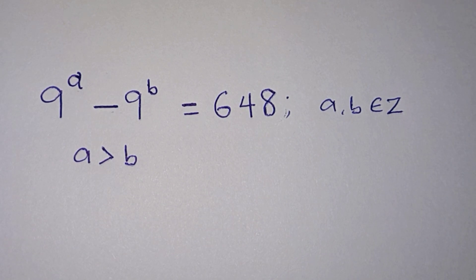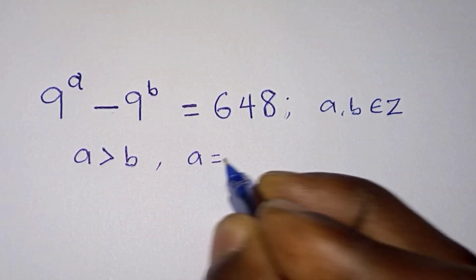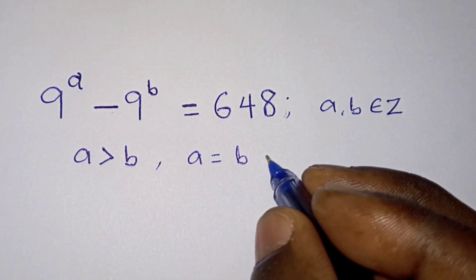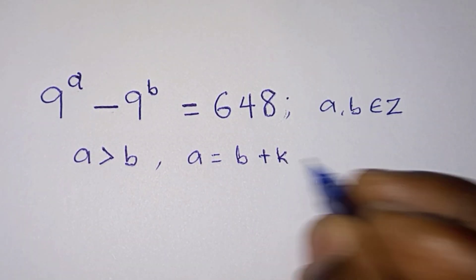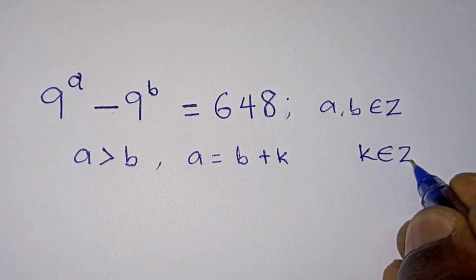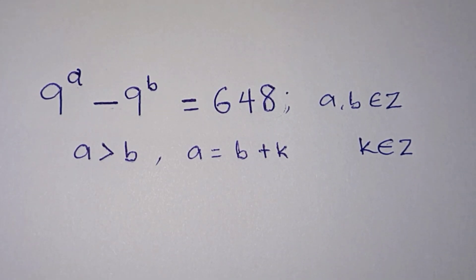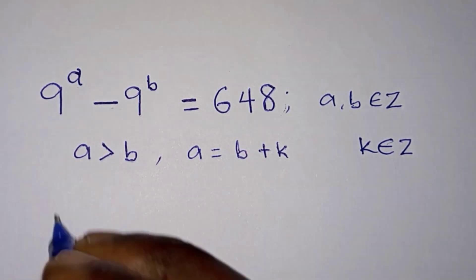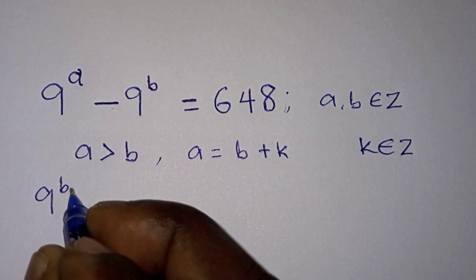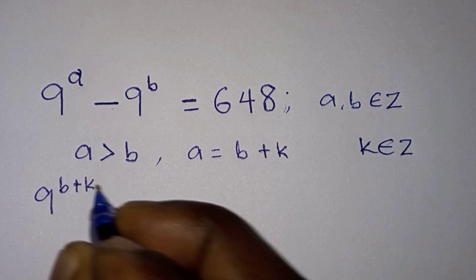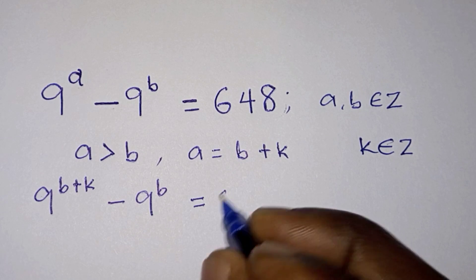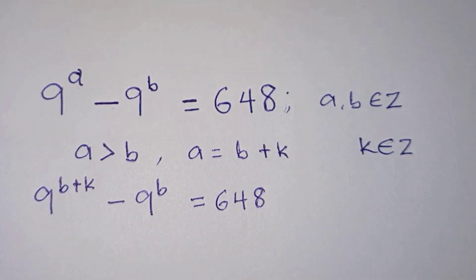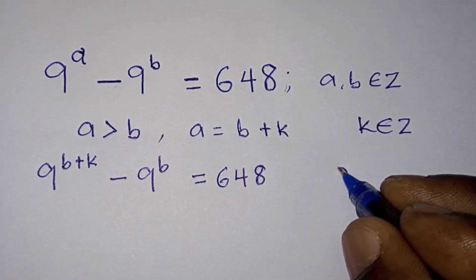Now the question is: how can we relate a to b? We can do this by adding a certain constant, let's call it k, to b, where k is also an integer. So wherever we see a, we are going to substitute it, giving us 9 to the power b plus k, minus 9 to the power b, is equal to 648.